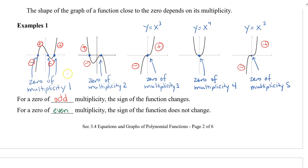For the zero of multiplicity two, we can see that the sign before this zero was negative, and then after the zero it's still negative. For the zero of multiplicity four, the graph was above the x-axis, so it was positive.